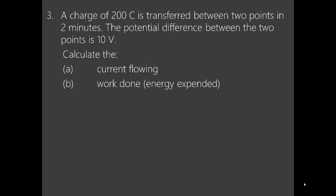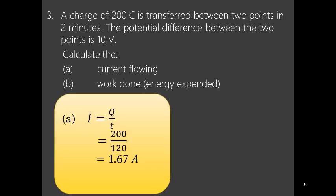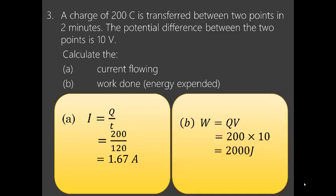So the solutions were very simple. Part A: I is equal to Q over T. The charge Q is 200 coulombs, so you write 200 over the time. The time is two minutes, but remember time should be in seconds — the SI unit of time is seconds. So you have to write it as 120 seconds. When you divide 200 coulombs by 120 seconds, you end up with 1.666 recurring, which you can round off as 1.67 amperes. Part B: the work done is QV, which is 200 times 10, giving you 2000 joules.